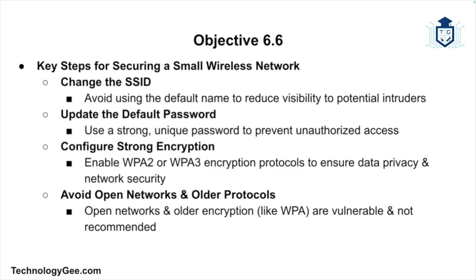Securing a small wireless network requires a few essential steps: changing the SSID, updating the password, and configuring strong encryption like WPA2 or WPA3. By taking these steps you protect your network from unauthorized access and ensure your data remains private and secure. Remember that open networks or older encryption protocols like WPA are not recommended due to their vulnerabilities.